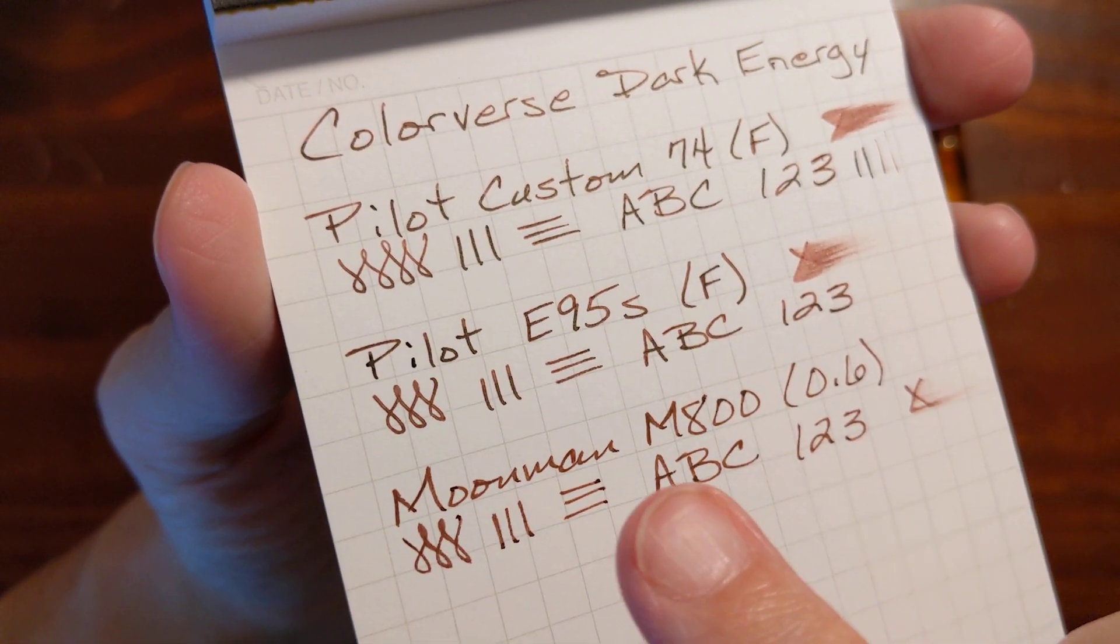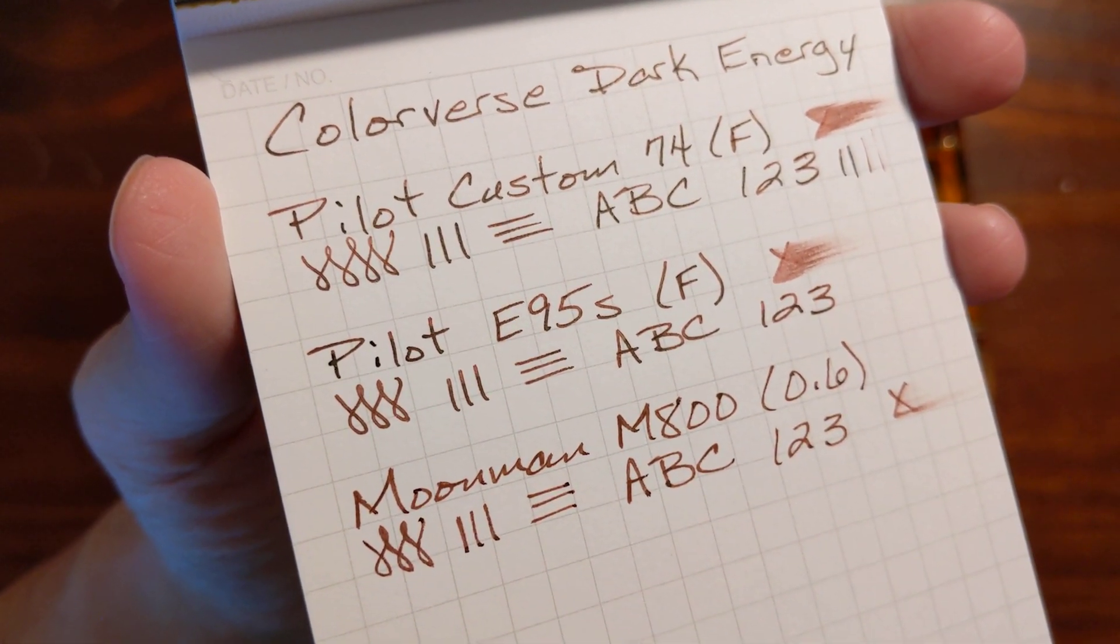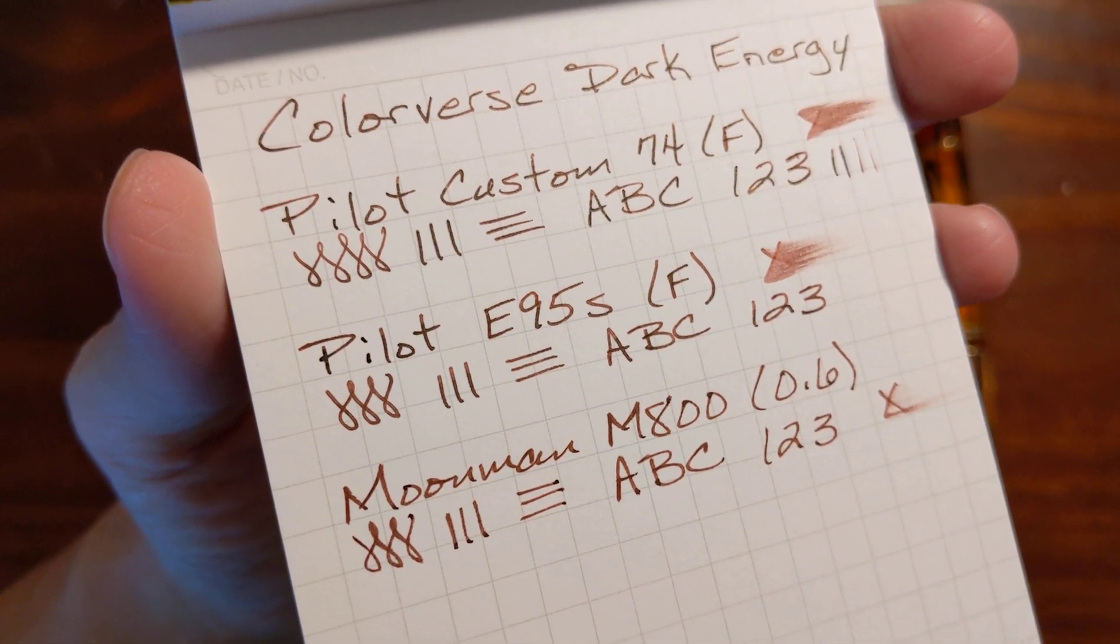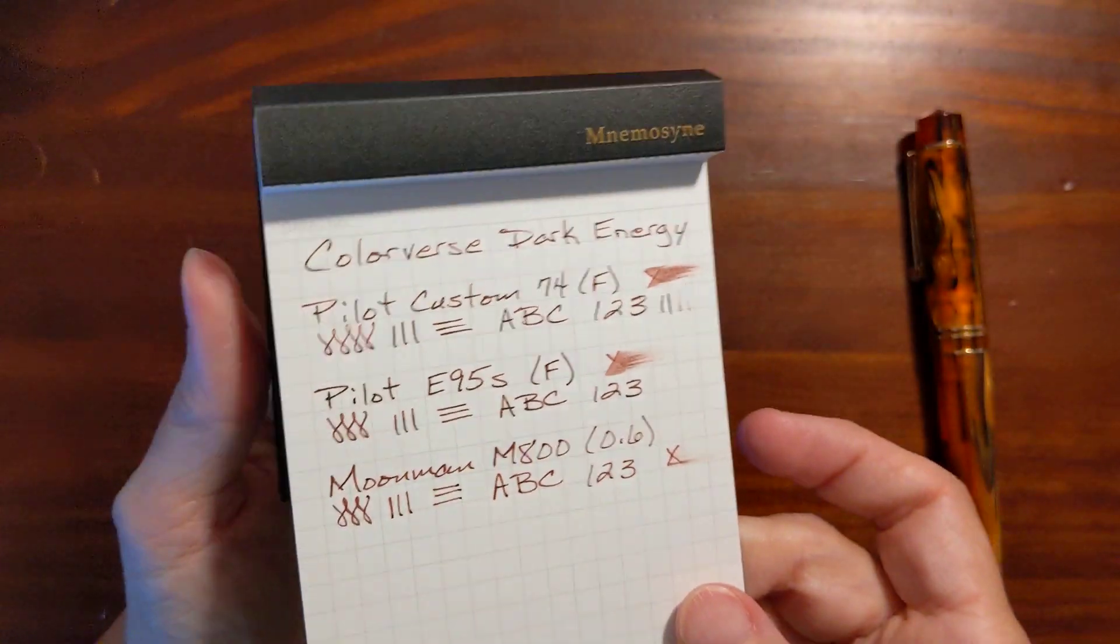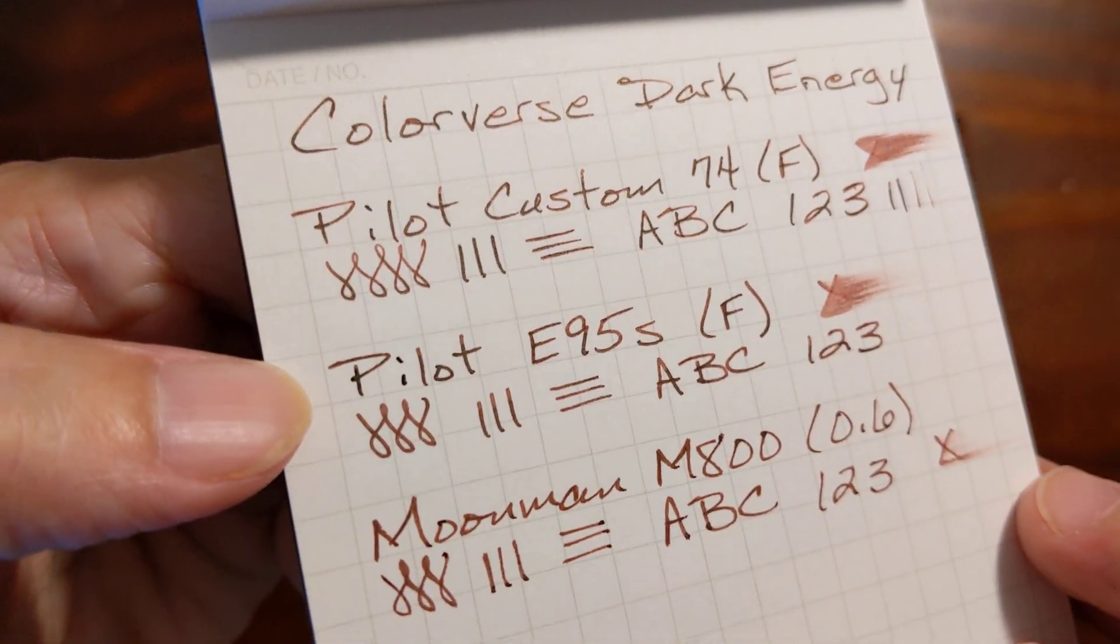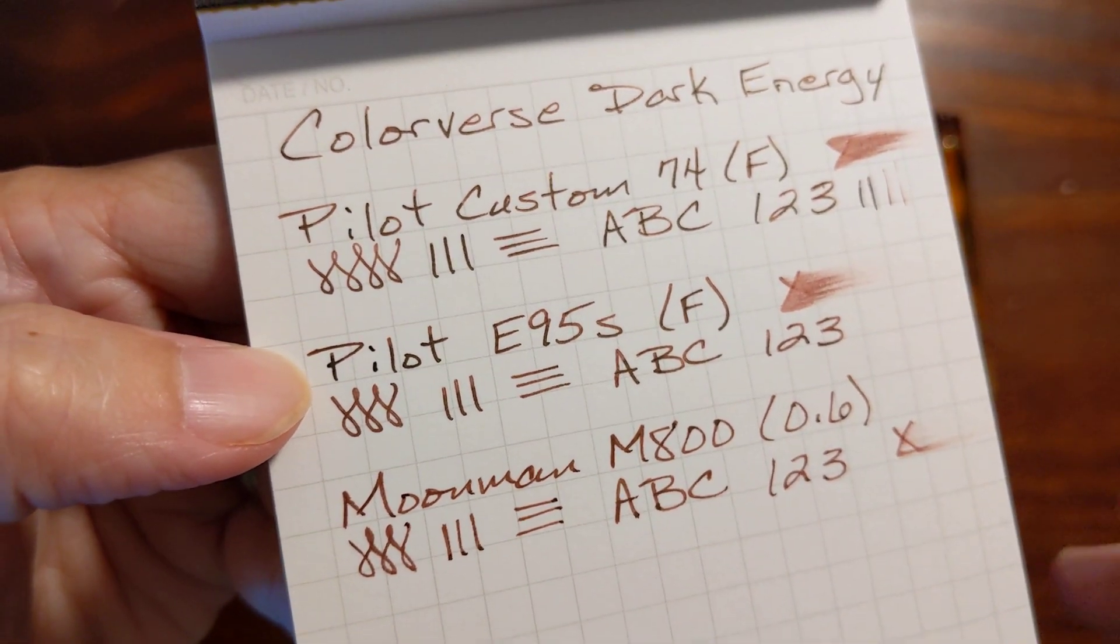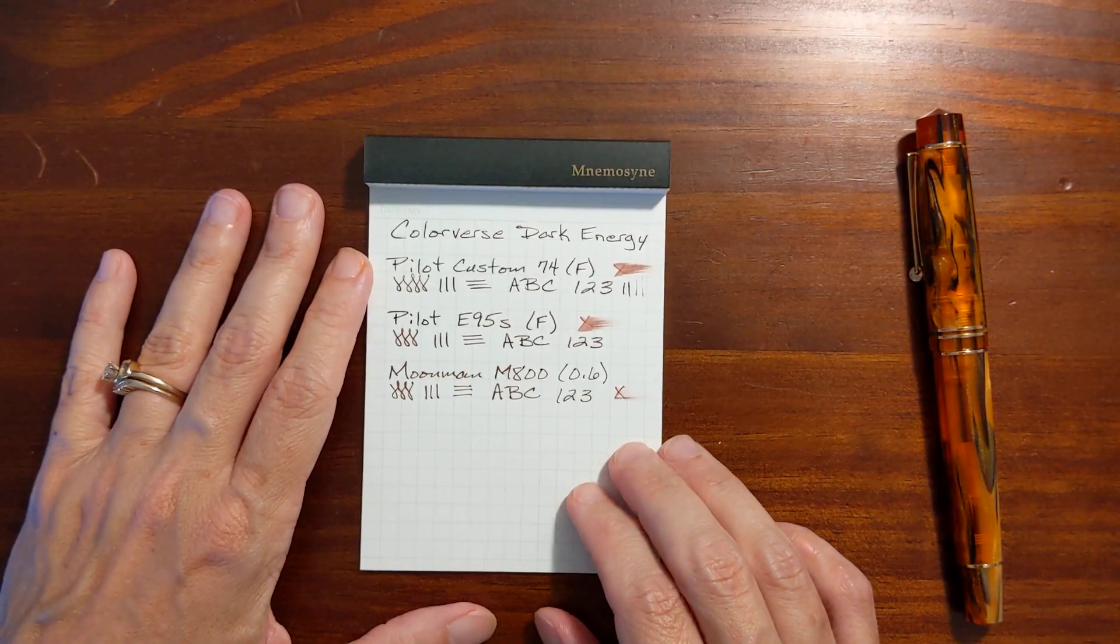And on the E95S when I write with it on Tomoe River paper it's putting down enough ink that you really start to see the sheen.